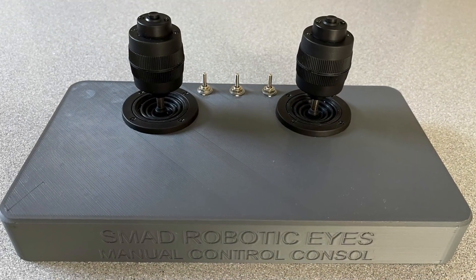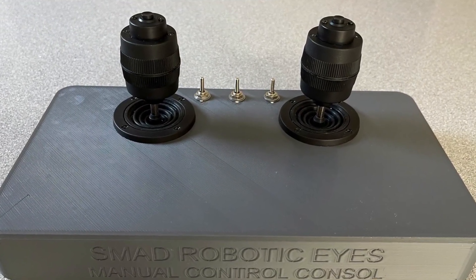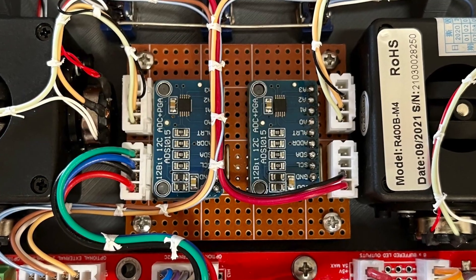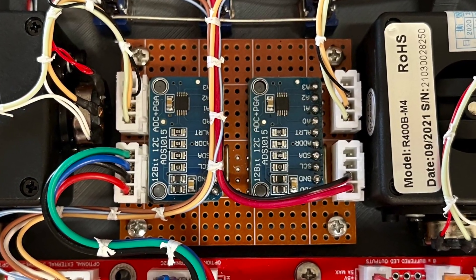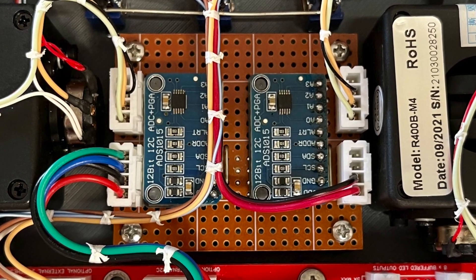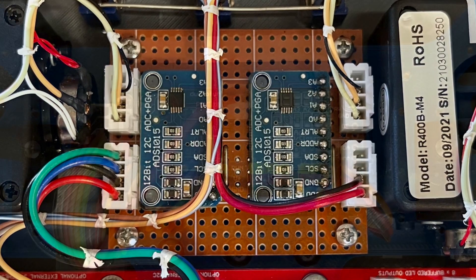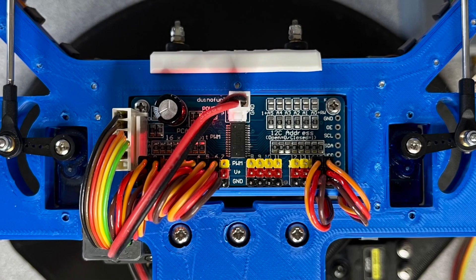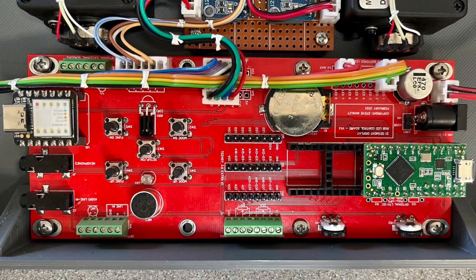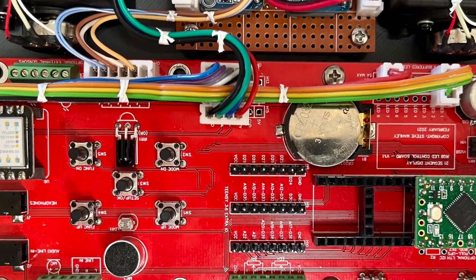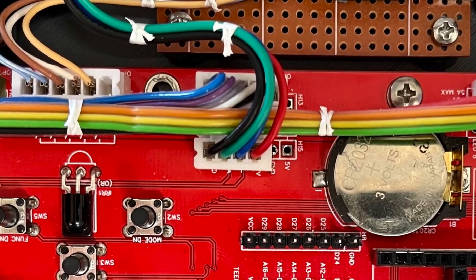How I read the joysticks and drive the servos also differs from James' design. Instead of using direct I/O pins on the microcontroller, I use two 4-channel 12-bit analogue to digital converter breakout boards, along with the 16-channel pulse width modulation PWM driver bob, where the microcontroller communicates with each of these bobs via the I2C bus.